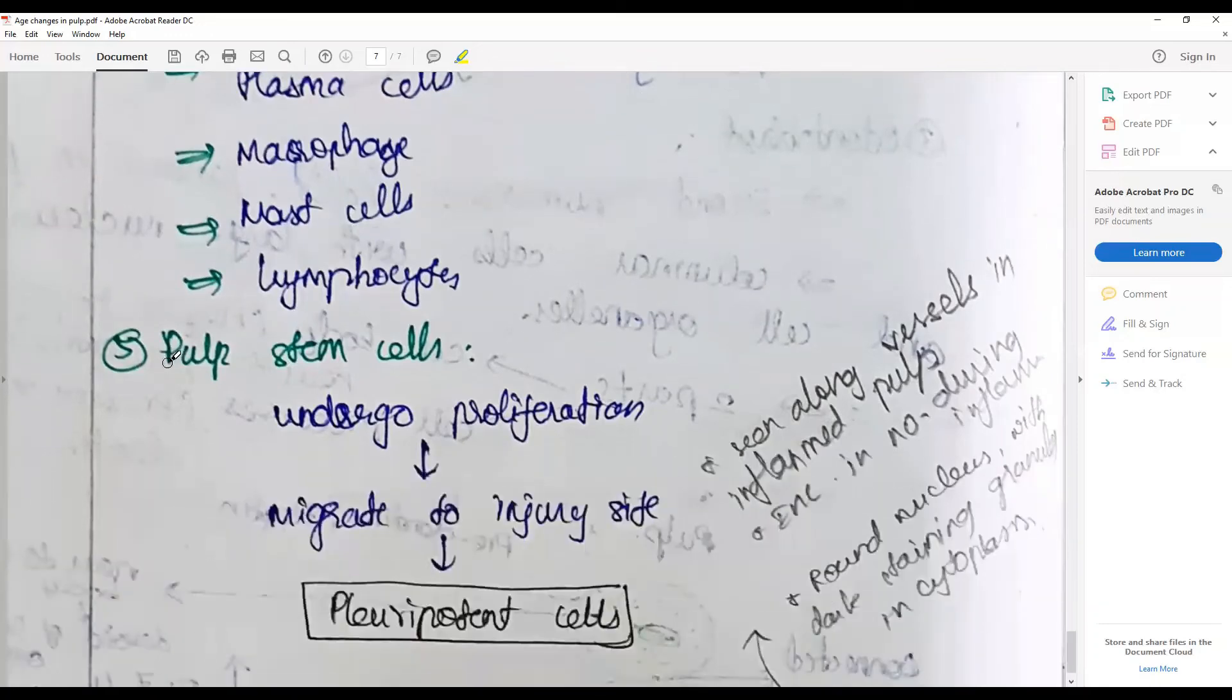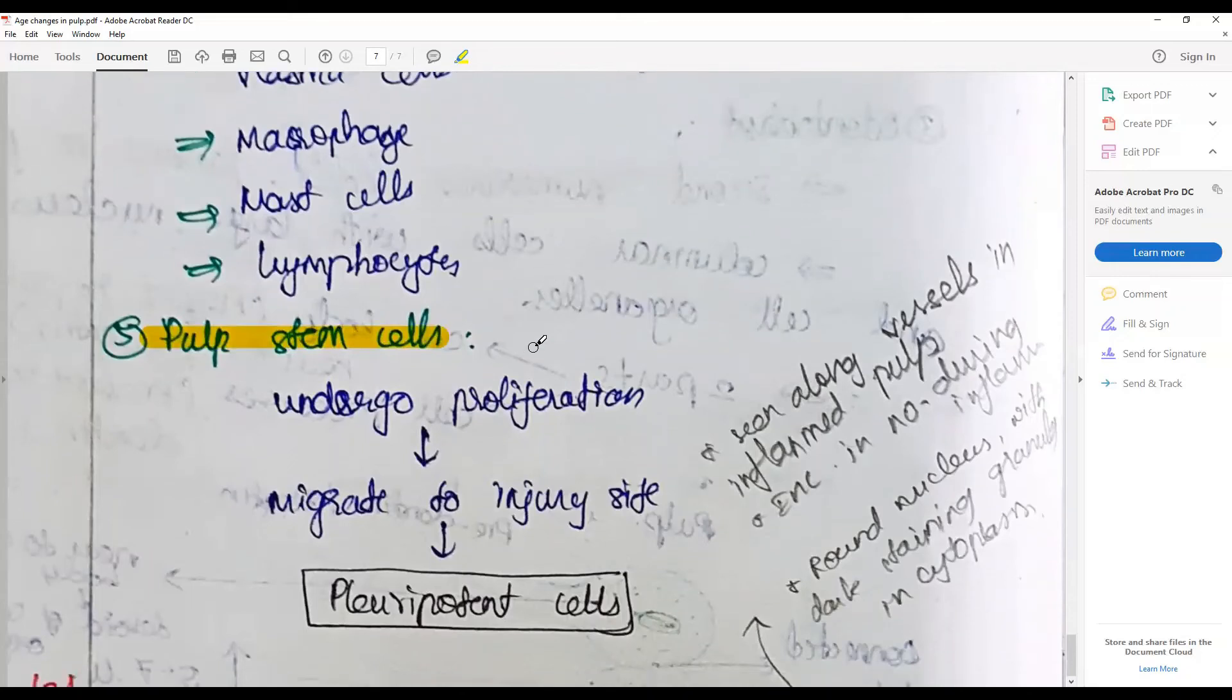The pulp stem cells are a part of the undifferentiated mesenchymal cells that can undergo proliferation and migrate to injury sites and can produce any other cells, namely odontoblasts, nerves, or fibroblasts. Often these stem cells are prominently seen in the inflamed pulp.